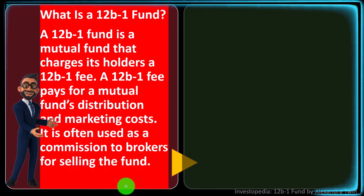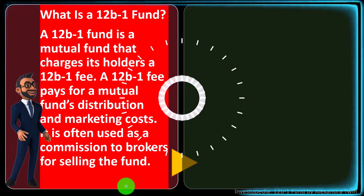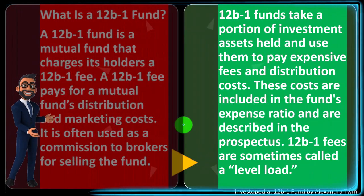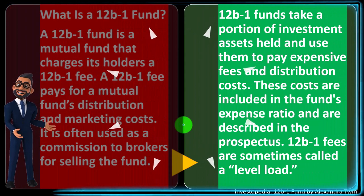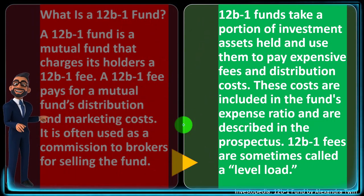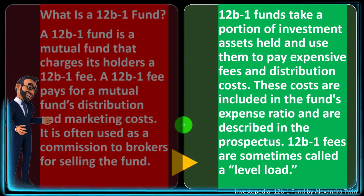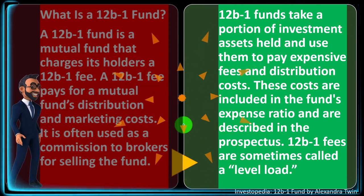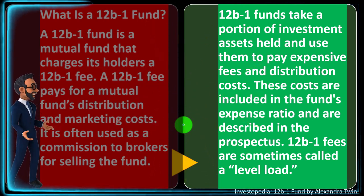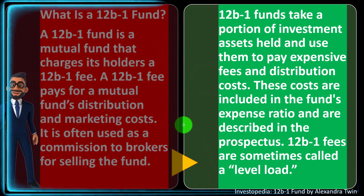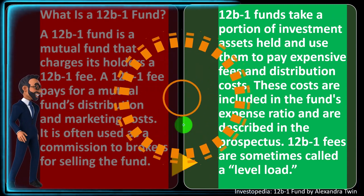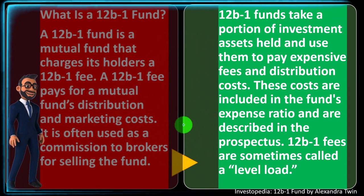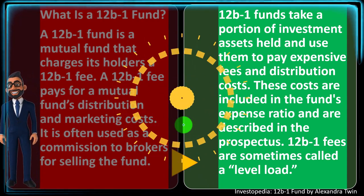The 12B1 fee is often used as a commission to brokers for selling the fund. 12B1 funds take a portion of investment assets held and use them to pay these fees and distribution costs. These costs are included in the fund's expense ratio and are described in the prospectus, which gives you details on this type of activity.